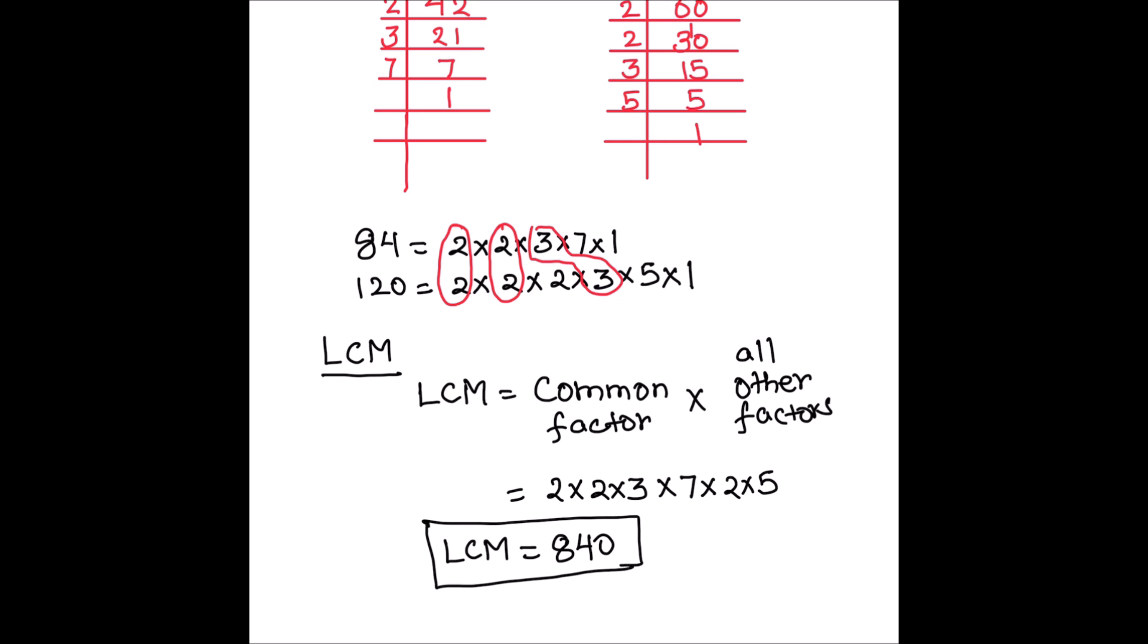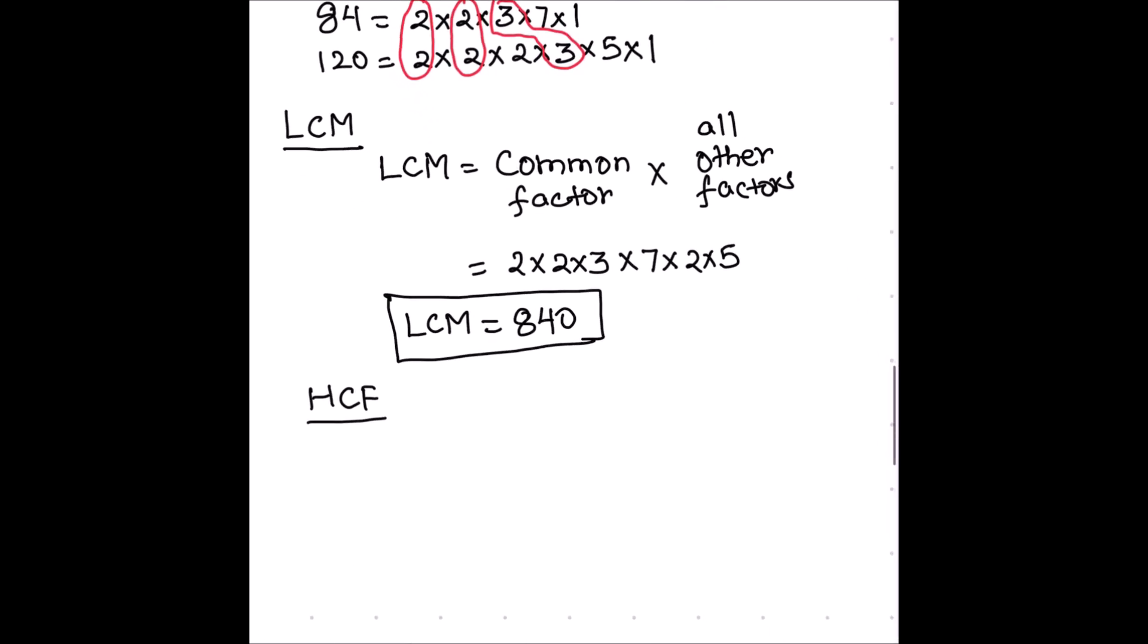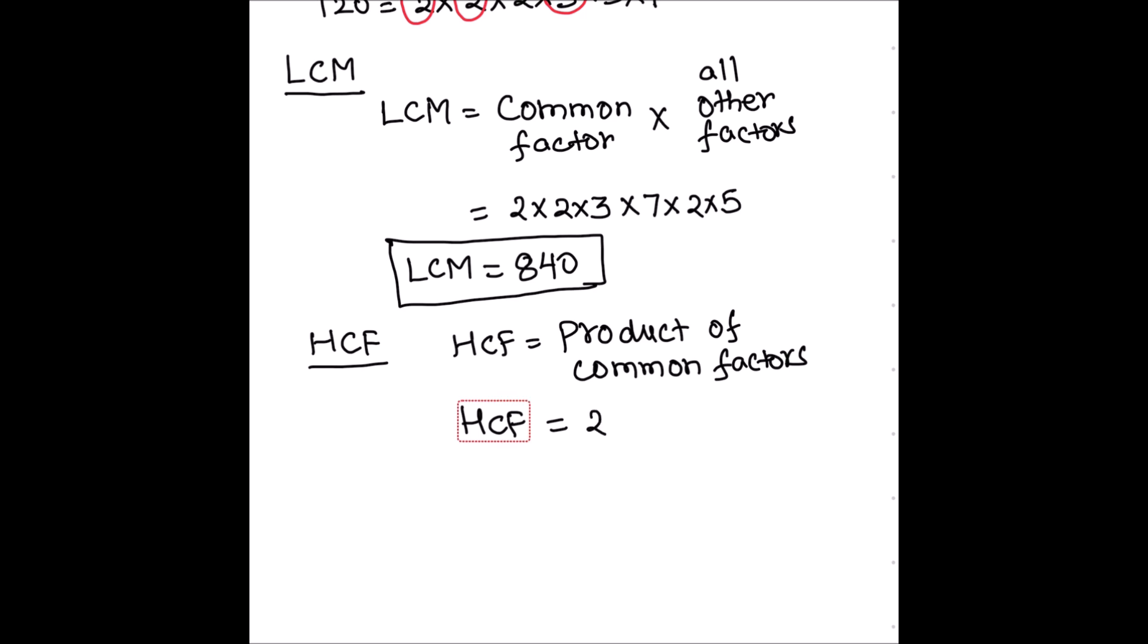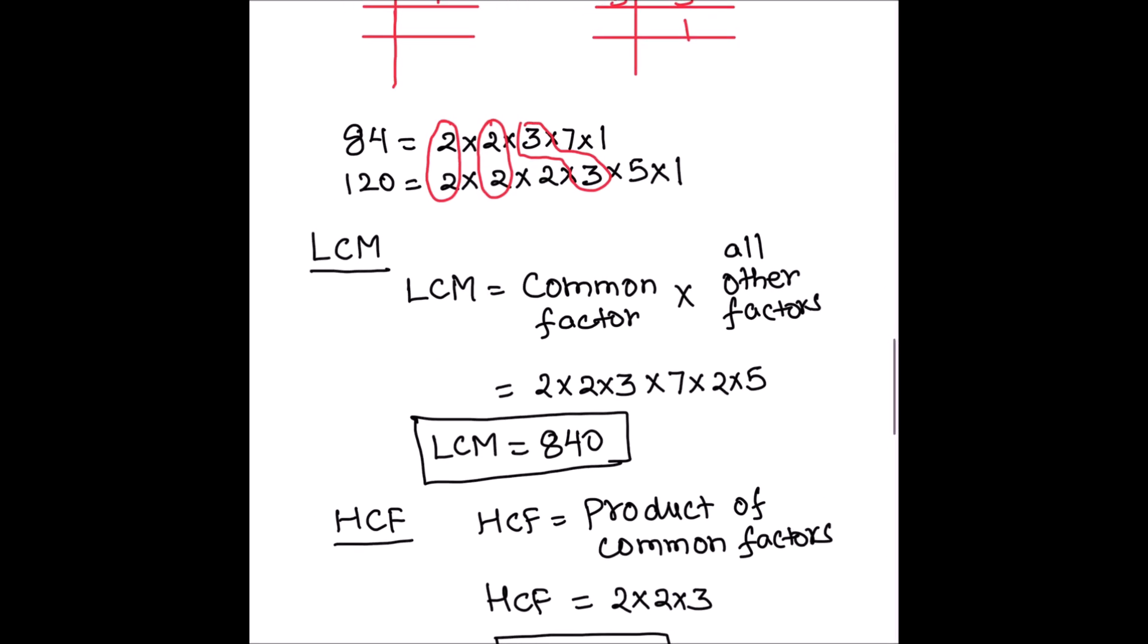Now let's find the HCF of the two numbers. For finding the HCF, we just need to multiply the common factors between the two numbers. HCF is the product of common factors, which equals 2 times 2 times 3, so HCF is 12.